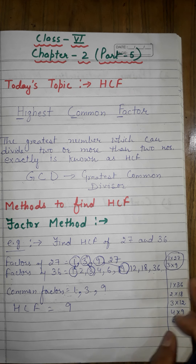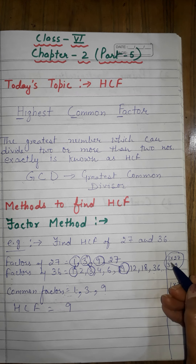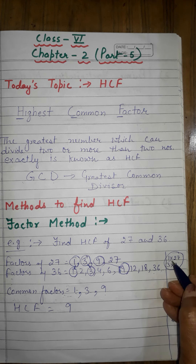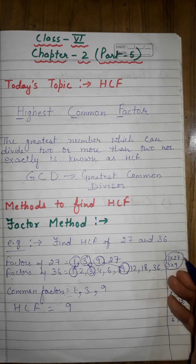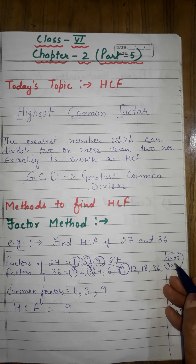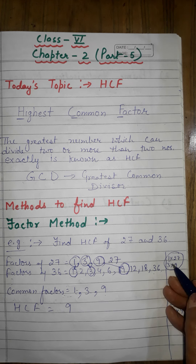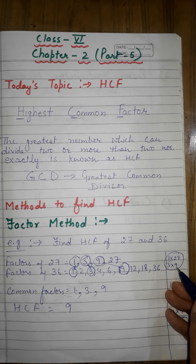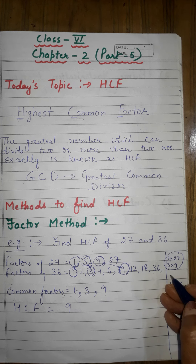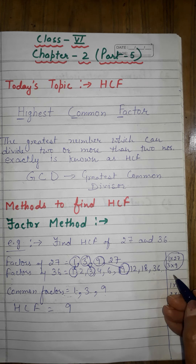Starting from number 1, since 1 is a factor of every number: 1 × 27 = 27. Number 2 cannot divide 27 because 27 is not an even number. Next, 3 × 9 = 27, yes. Four, five, six, seven, eight — none of these divide 27 completely. Next is 9: 9 × 3 = 27.